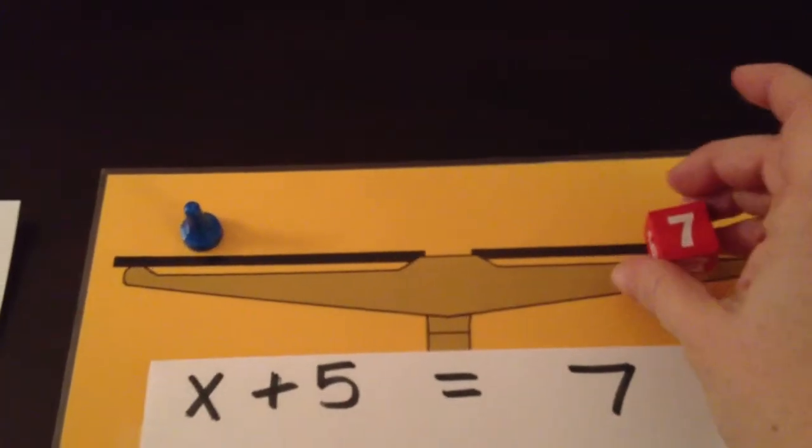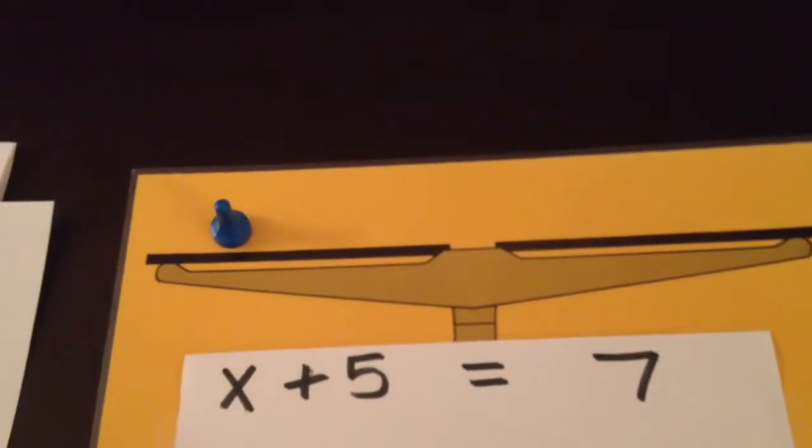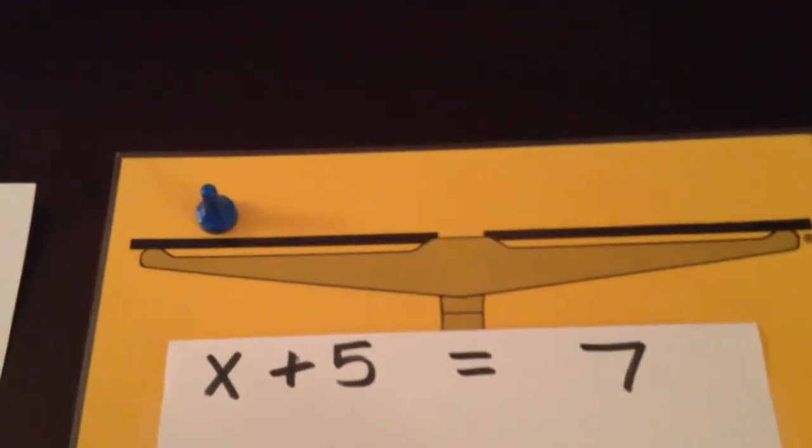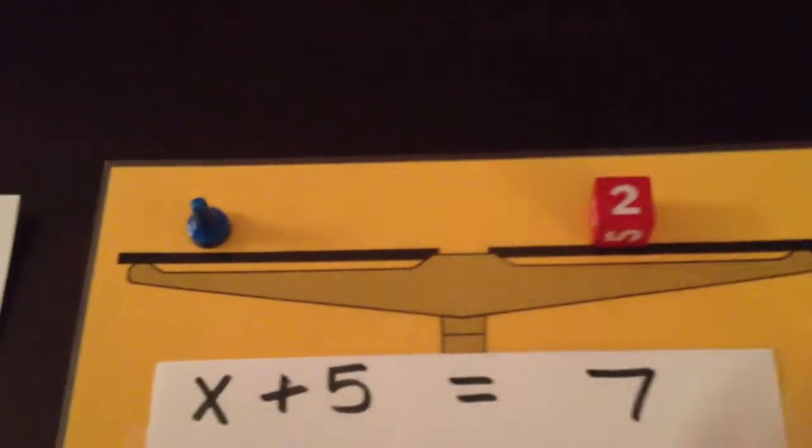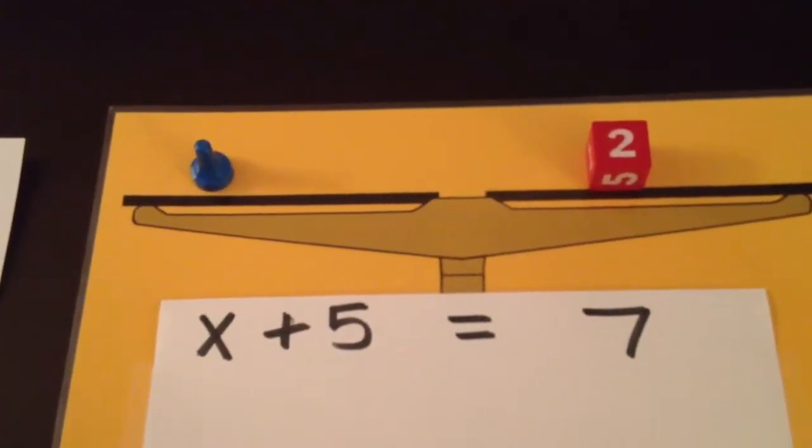And here we go, and we look at this 7, and we're going to actually change that. If we subtract 5 from that, we're going to change that to a 2. And so x equals 2.